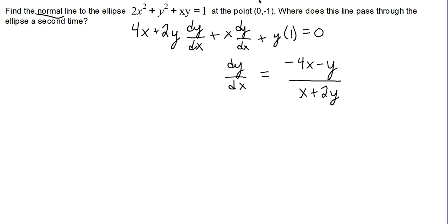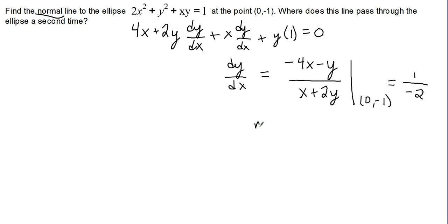We know that our ellipse contains the point (0, -1), and we're interested in the slope there, so we will evaluate this at the point (0, -1). If x is 0, negative 4x is 0, and if y is negative 1, then negative y is positive 1. The denominator: if x is 0, that's 0 plus 2 times negative 1, or negative 2. So the slope of the tangent line is equal to negative 1, meaning the slope of the normal line is equal to positive 2 — the opposite reciprocal.